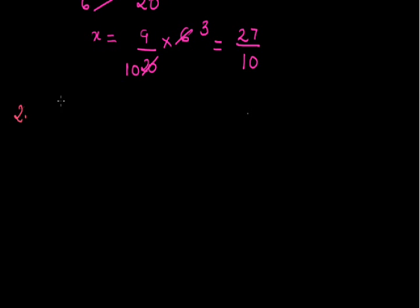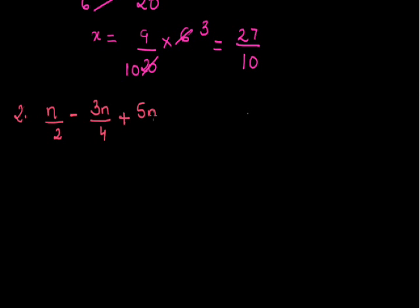Coming to the next question. Second question: n upon 2 minus 3n upon 4 plus 5n upon 6 is equal to 21. Calculate the value of n in this question. Now what I can do is take the LCM of 2, 4 and 6. The LCM of 2, 4 and 6 is 12.